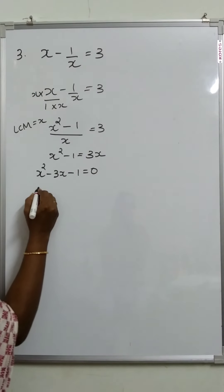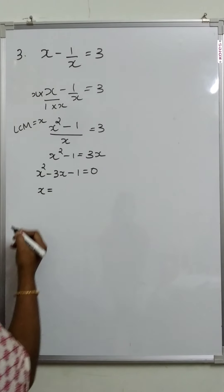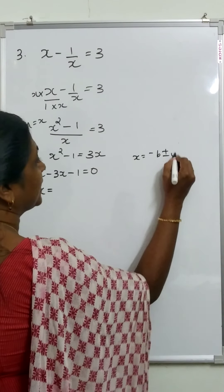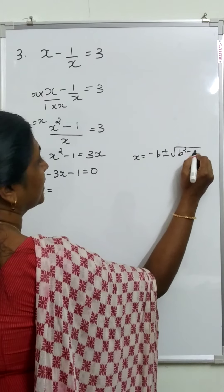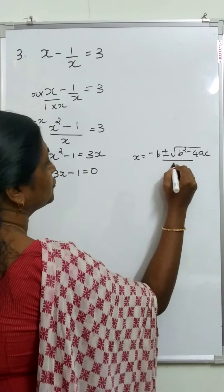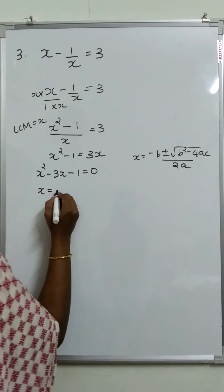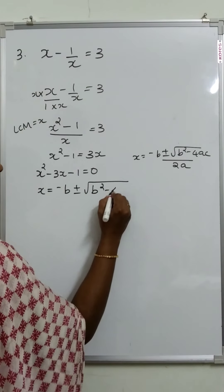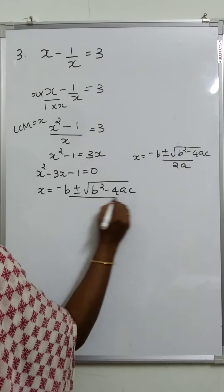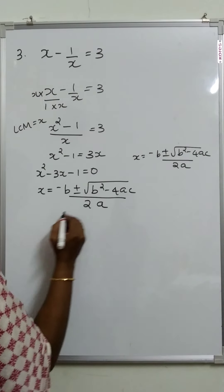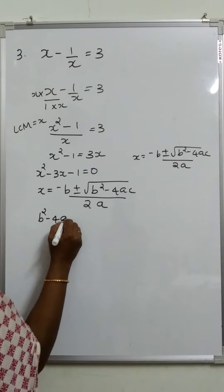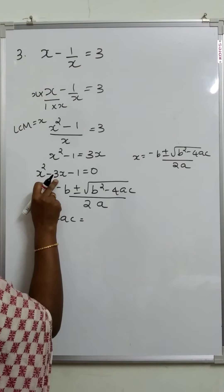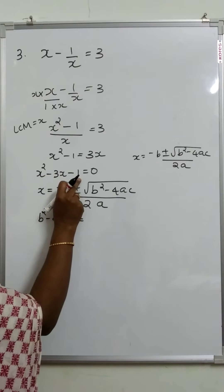Then x is equal to minus b plus or minus root of b squared minus 4ac by 2a. Here a is equal to 1, b is equal to minus 3, c is equal to minus 1.